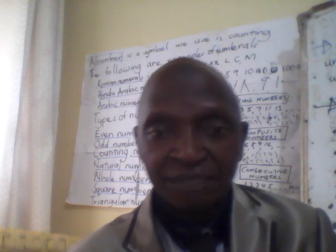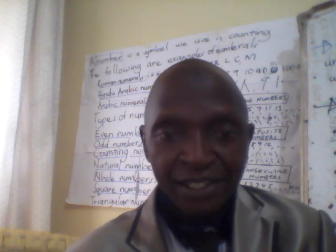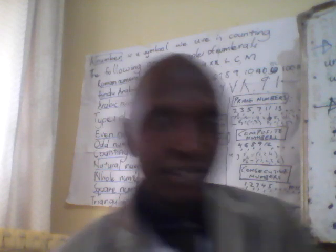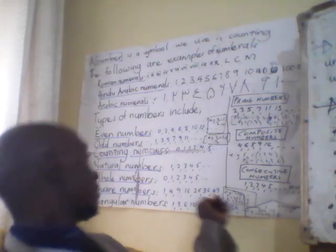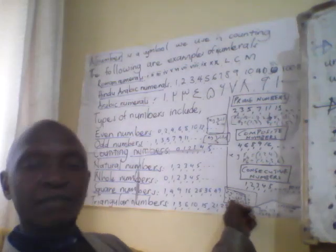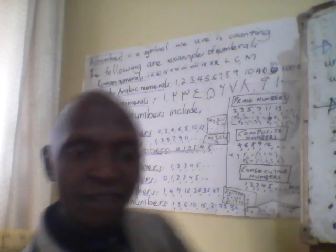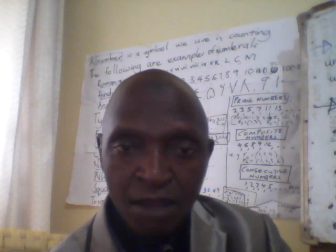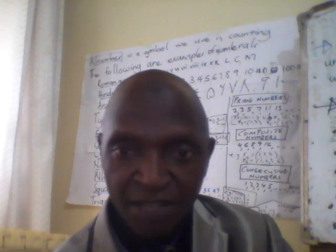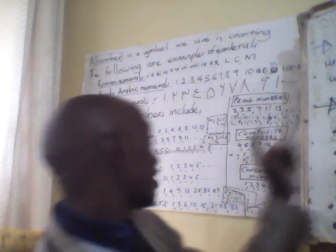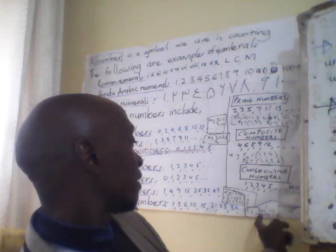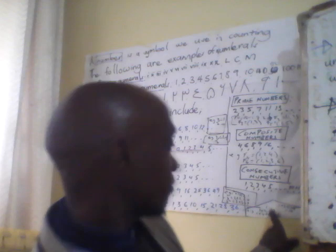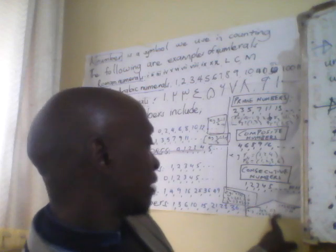Square numbers are the numbers we get by multiplying a number by itself, as I've illustrated here. Triangle numbers are the numbers you get by adding the counting numbers, as I've illustrated here. When you add the counting numbers, you get the triangle numbers.